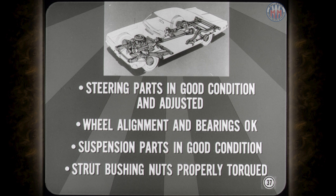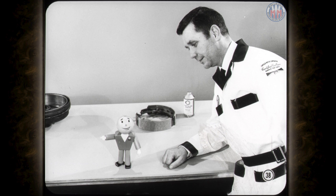Bill, you've covered just about everything but steering and suspension. What's the story there? Make sure all steering parts are in good condition and properly adjusted. Wheel alignment and bearing adjustment must be okay. Suspension bushings and ball joints must be in good condition, and the strut bushing nuts must be properly torqued. Don't ever let anyone try to cure chatter by fooling around with suspension design — you're only asking for trouble. If a suspension change would stop chatter vibration, they'd do it at the factory.